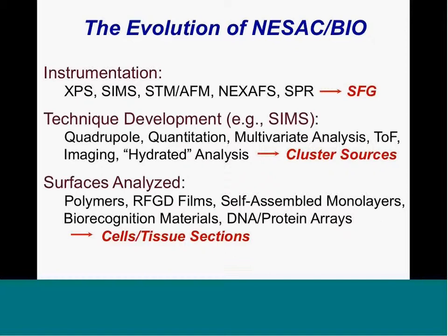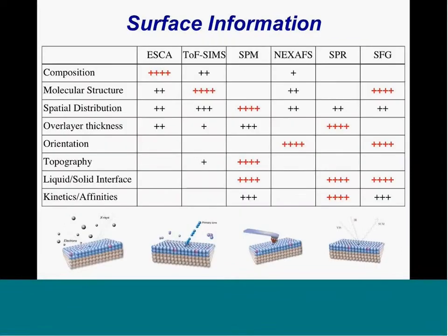The surfaces we've analyzed have also evolved. We started out mainly doing polymer surface science, then moved to RF glow discharge deposited films, self-assembled model layers, biorecognition materials, arrays of DNA, protein, carbohydrate, and now a lot of effort is being put into looking at cells and tissue sections. The complexity of the surfaces we're analyzing is definitely on the increase.